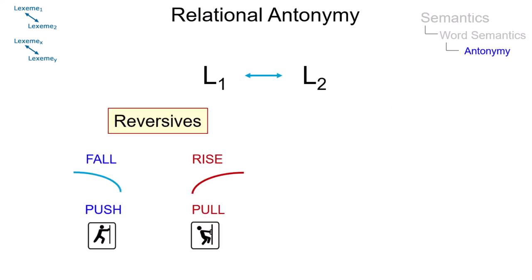Reversives normally exhibit a relation between verbs describing movement in opposite directions, whereas converses are lexemes which describe a relation between two items from alternative viewpoints.